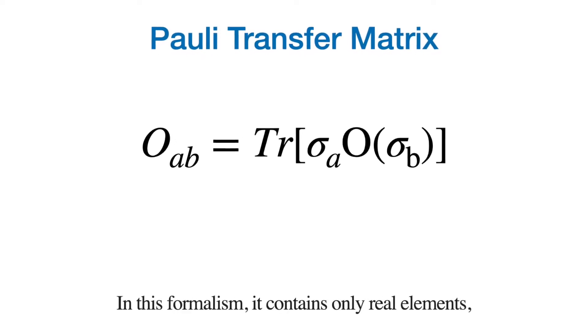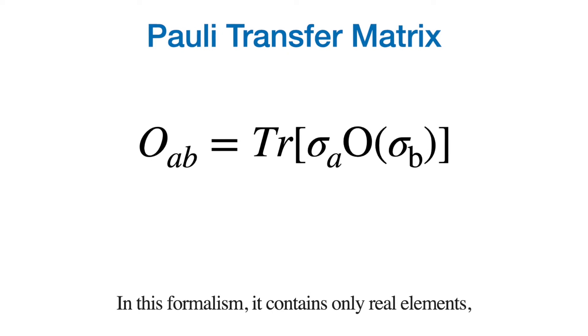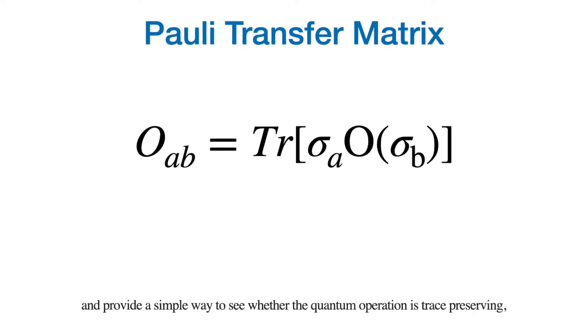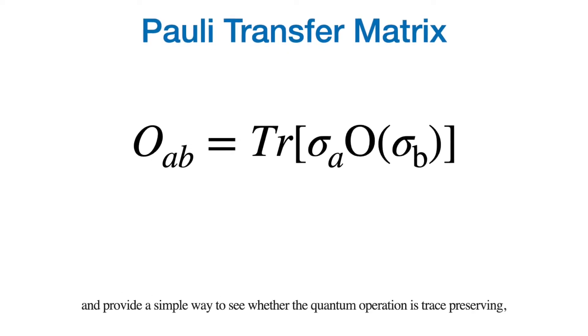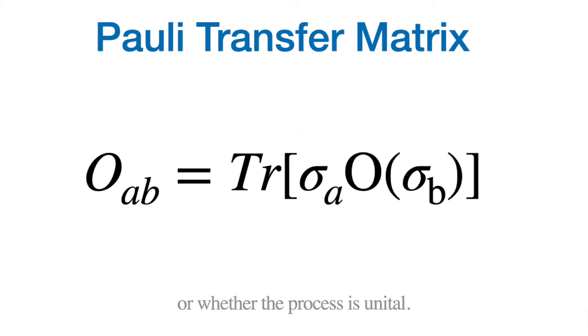In this formalism, it contains only real elements and provides a simple way to see whether the Pauli operator is trace-preserving or whether the process is unitary.